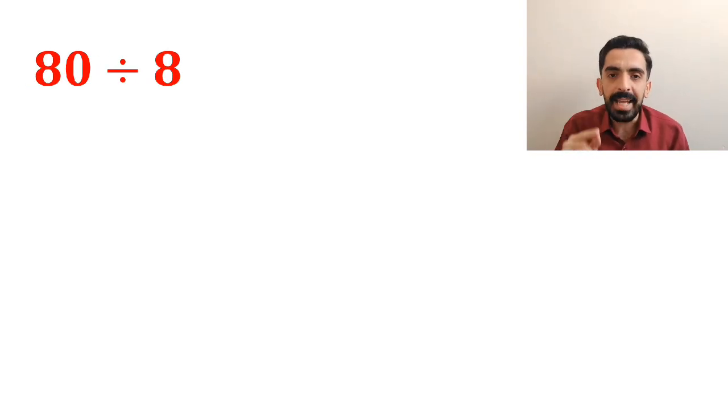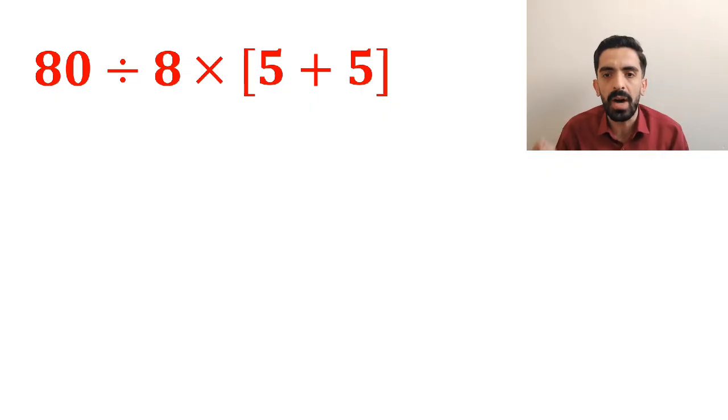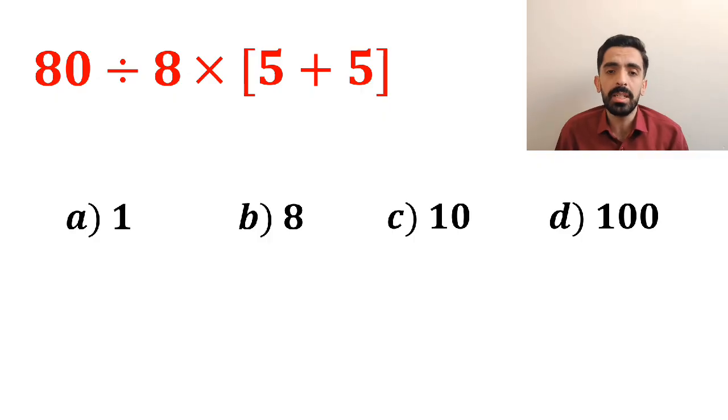What is the value of the expression 80 divided by 8 times open bracket 5 plus 5 close bracket? Which option do you think is the correct answer to this question?